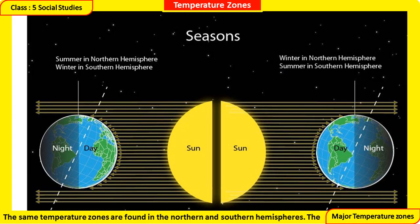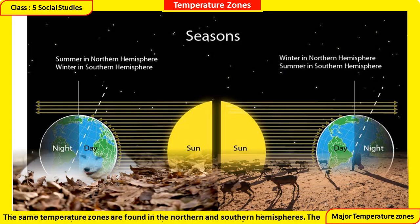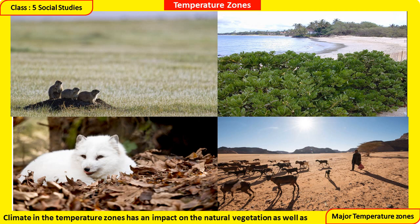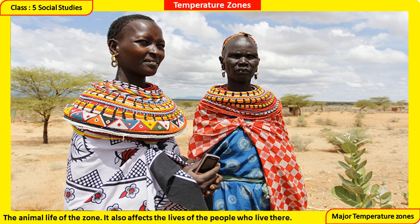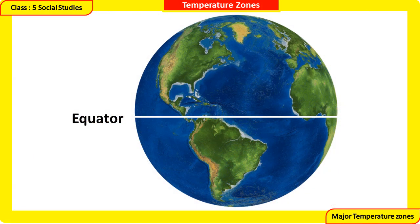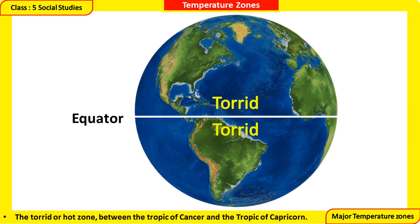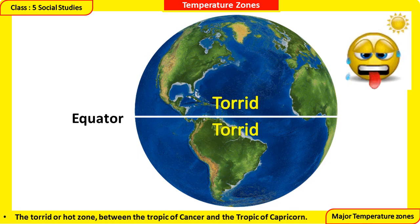The same temperature zones are found in the northern and southern hemispheres. The climate in the temperature zones has an impact on the natural vegetation as well as the animal life of the zone. It also affects the lives of the people who live there. The three temperature zones are: the Torrid Zone — torrid means very hot.